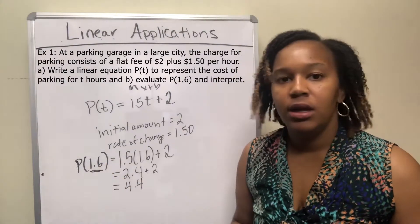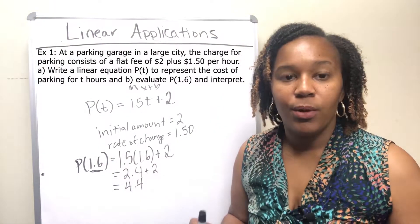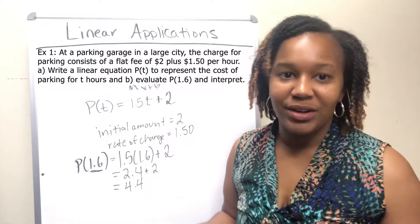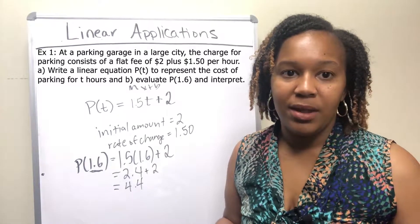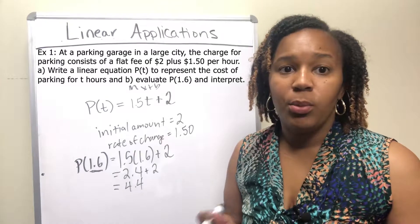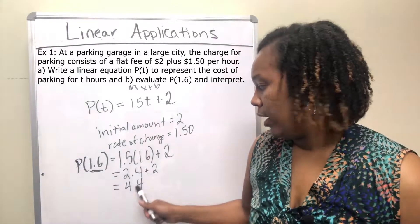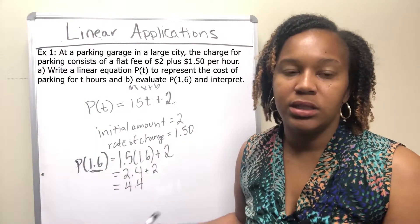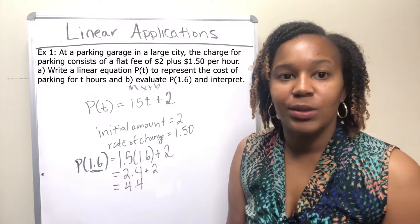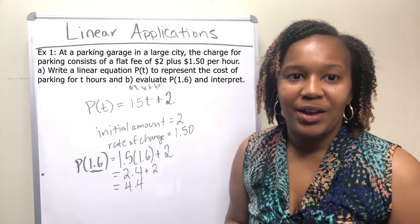And so what that means is that since we replaced 1.6 with t, that means when you park for 1.6 hours, and you can convert that to see exactly how many hours and minutes that is, but when you park for 1.6 hours, you're going to pay a total of $4.40 to park in that parking garage. And so this is how you work a linear application.